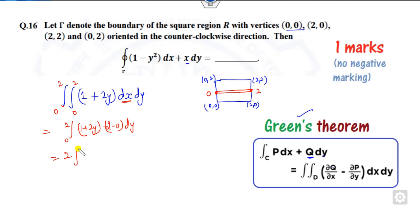So 2 is outside: 1 + 2y. The integration of 1 + 2y is y + y². You can see the right answer: 2 plus 4, so the right answer is 12.